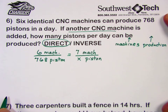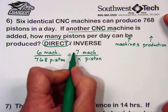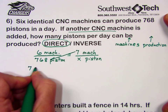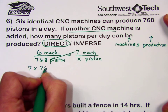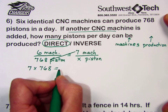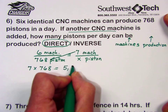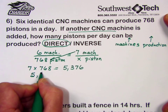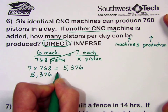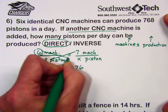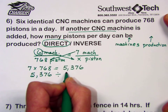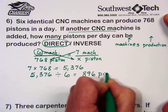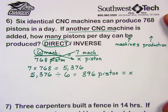With our proportion, we're going to solve for the missing variable using the cross multiplication technique, multiplying the diagonal with the two numbers in it. 7 times 768 gives us 5,376. We take that result and divide it by 6 — the other diagonal — giving us 896 pistons, which is the value of our variable.